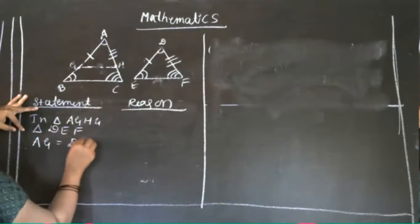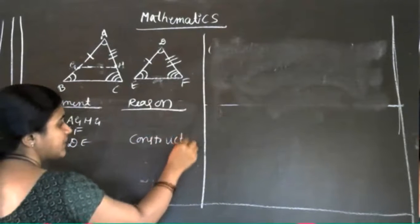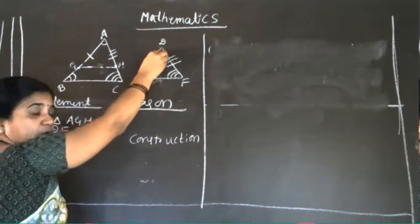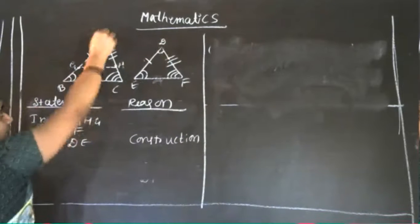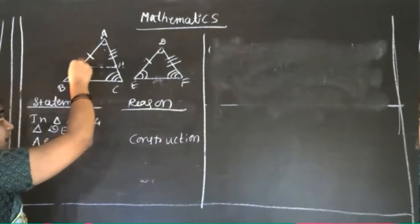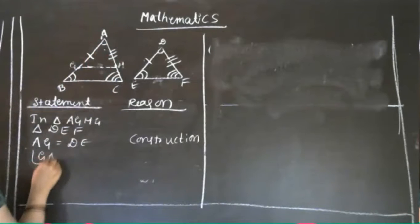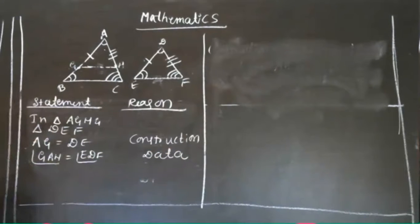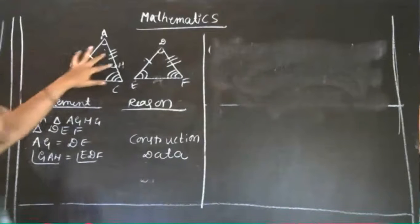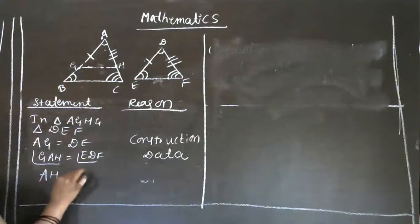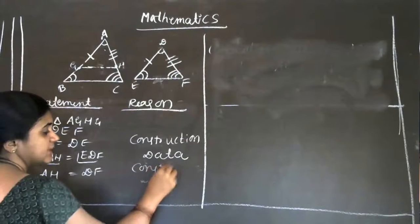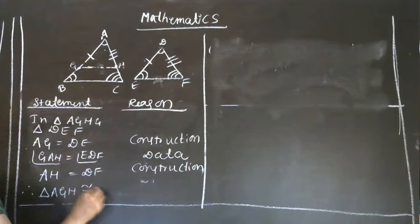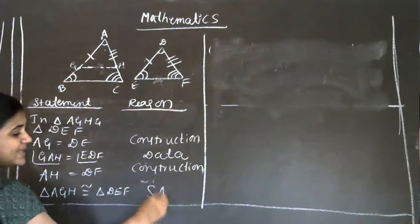AG which is equal to DE — construction. Next, angle A is equal to angle D — because of the data. The angle BAC equals angle GAH, and angle GAH equals angle EDF — that is given in the statement. Third, AH which is equal to DF — that is also construction. We got the result: triangle AGH is congruent to triangle DEF according to SAS criteria — side, angle, side.